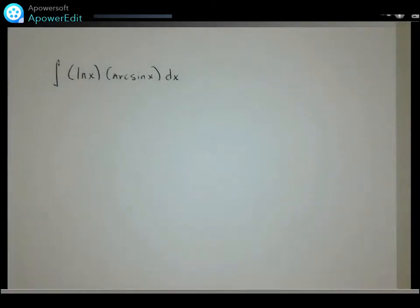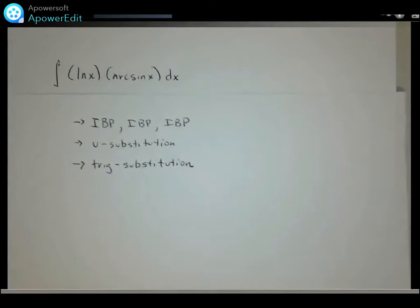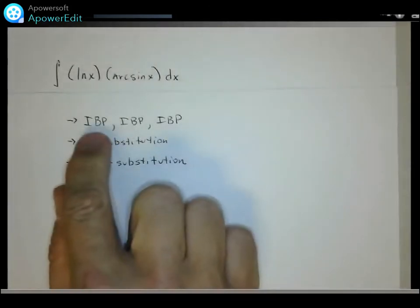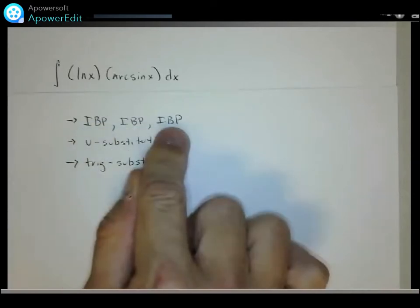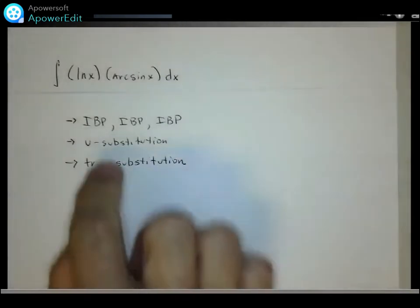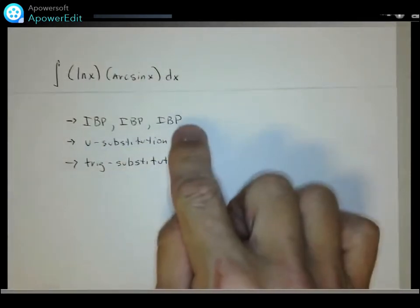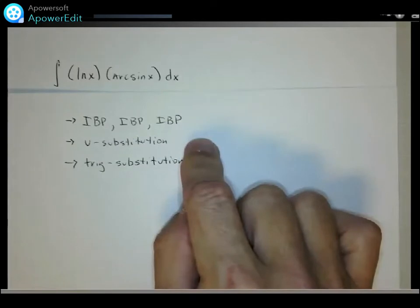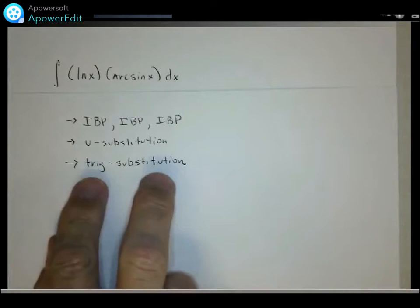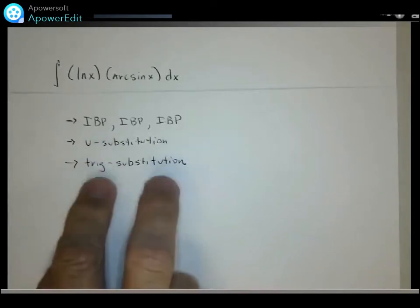Before we get started, there are a couple of things you need to be able to do. The way I'm going to solve this problem requires integration by parts — and yes, we're going to do it three times. There will also be a u-substitution in the mix. We'll also need trig substitution, which is something of a dying art unless you take calculus in college.